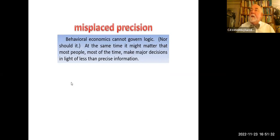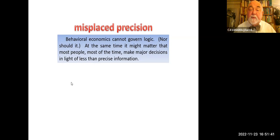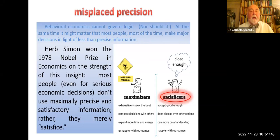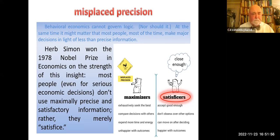Another kind of example: behavioral economics cannot govern logic, nor should it. At the same time, it might matter that most people most of the time make major decisions in light of less than precise information. Herbert Simon won the 1978 Nobel Prize in economics on the strength of this insight. Most people, even for serious economic decisions, don't use maximally precise information; rather, they merely — as he puts it — satisfice. It's close enough.